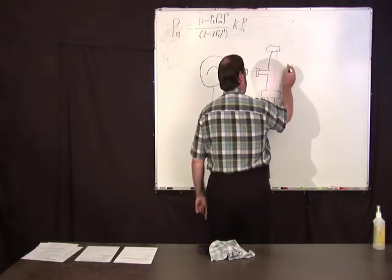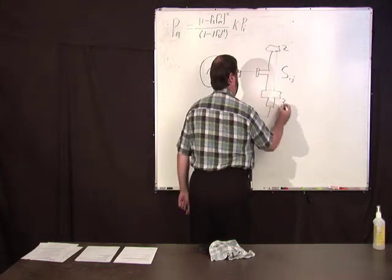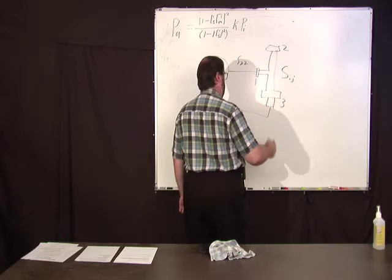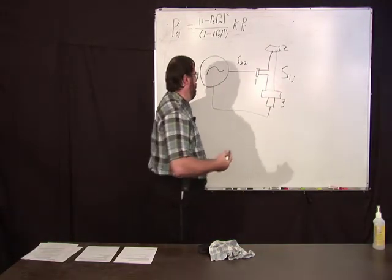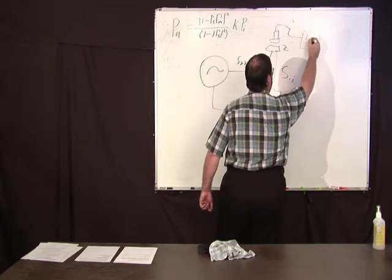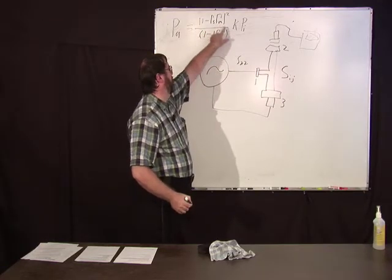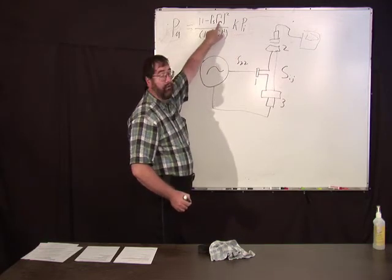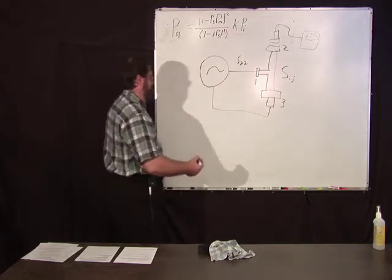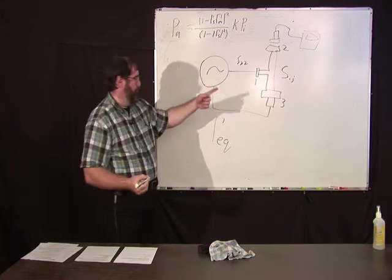Well, this thing here is going to have some S parameters, Sij. We'll call this port two, this port three, this port one. So for instance, S22 is just the reflection off this port with all of the ports terminated. Well, in this kind of configuration, you put your unknown sensor here and you're going to measure some power. And let's say you know this, you know the cal factor of your sensor and you know the reflection coefficient of your sensor.